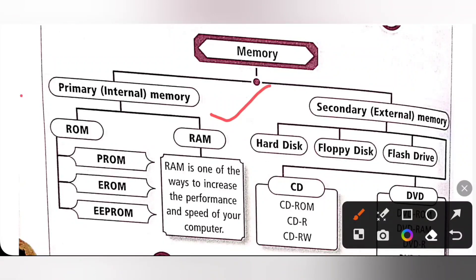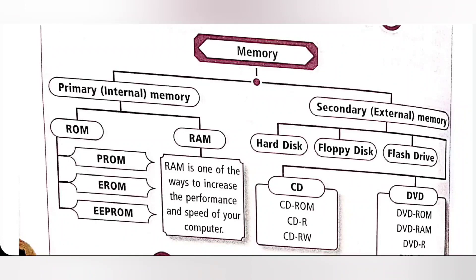RAM is a Volatile Memory — a type of memory in which data is lost when it is powered off. ROM and Secondary Memory are Non-Volatile Memory, that is Permanent Memory — a type of memory in which data remains stored even if it is powered off.